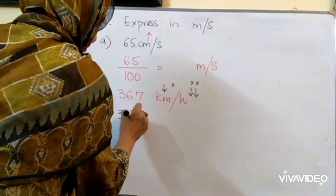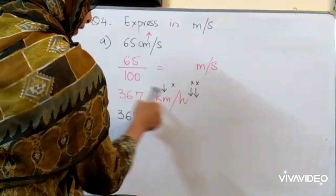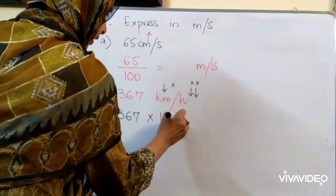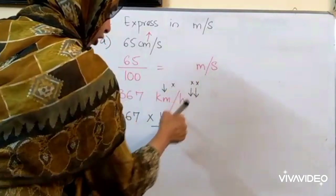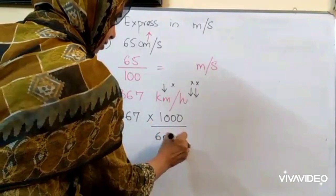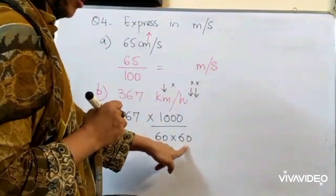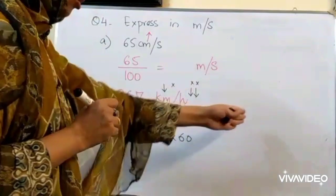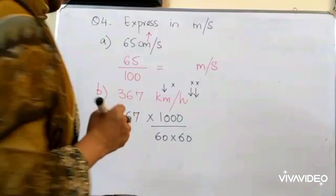Now, 367. Multiplied by. Because kilometer is already in the numerator. So, we will be writing it in the numerator. Denominator. Hours are in denominator. So, we will be writing them here. 60 multiplied by 60. For minutes and for seconds. That is all. Solve it. And your answer will be converted into meter per second.